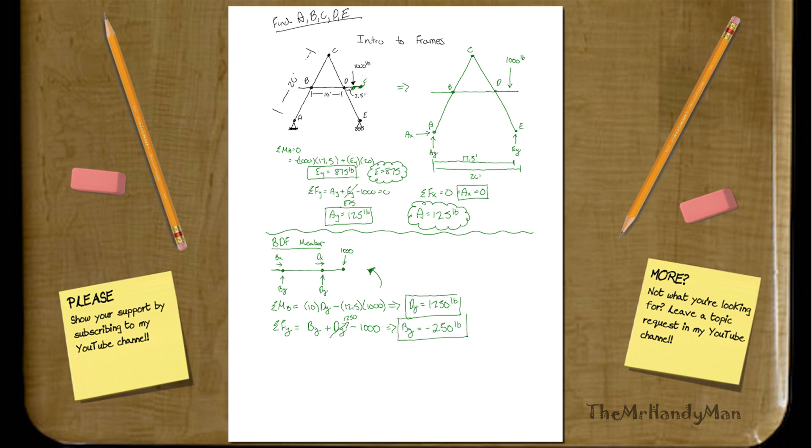250 pounds, opposite, so down. Of this, sigma F_X is going to equal B_X plus D_X equals zero, thus we know that B_X equals negative D_X. So it's just a relationship, we know that they're opposites of each other. Now that we've solved everything that we possibly can from the BDF, we still haven't gotten much solutions, but you can see how we are getting closer.